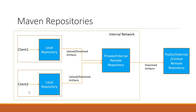Similarly, in the client-2 machine, when we execute a Maven command, the corresponding built artifacts will be stored in the local repository of the client-2 machine. When Maven cannot find the corresponding dependencies in the local repository, then it will go ahead and download those dependencies from the remote repository.